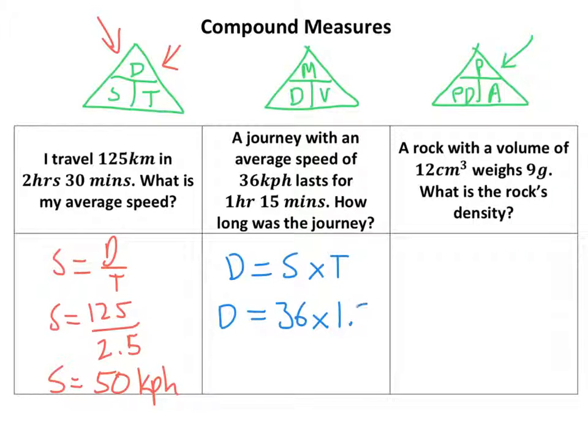So we go distance equals, now speed is 36, times time. Now again, we've got 15 minutes is a quarter of an hour, so that's 1.25. Chuck that in your calculator and you get 45, and it was kilometers per hour, so it's kilometers it's being measured in.